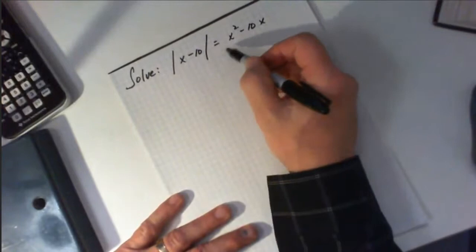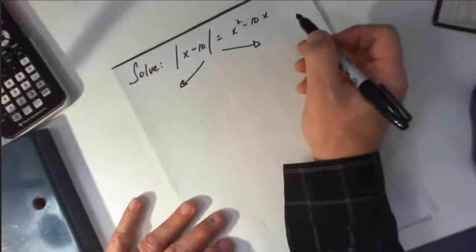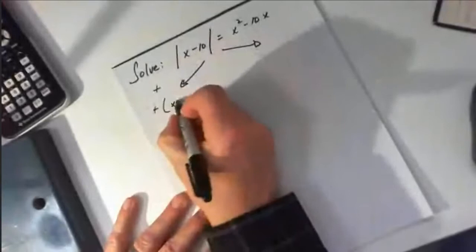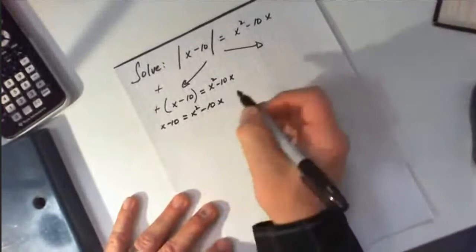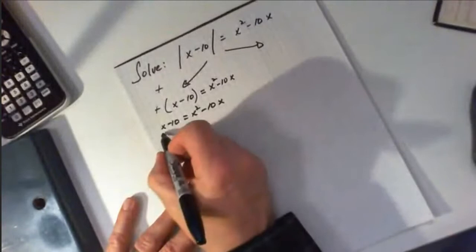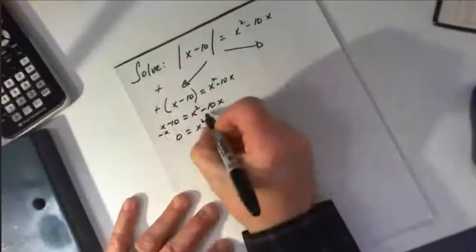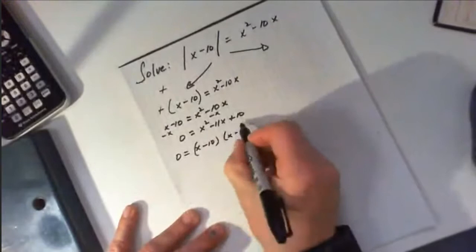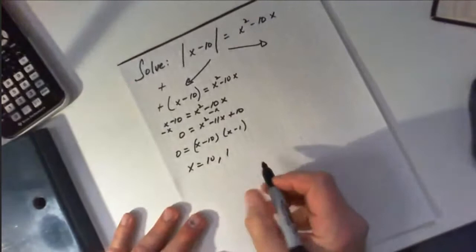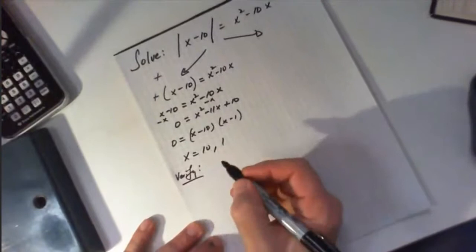Our last example looks a little more complicated, but it's done exactly the same way — just be careful. From the positive side, this would be x minus 10 is equal to x squared minus 10x. For solving quadratics, you make them equal to 0. Moving everything gives x squared minus 11x plus 10 equals 0. Factoring this gives (x minus 10)(x minus 1), so x would be equal to 10 and 1. Because there are two answers, you'll have to verify both of them.